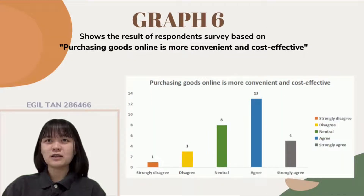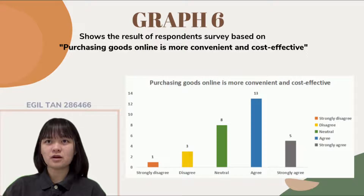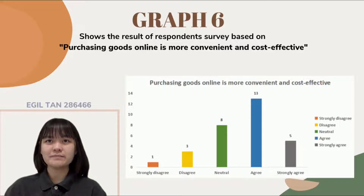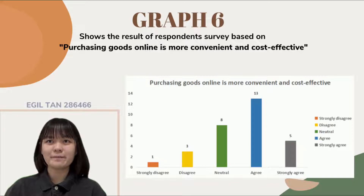In graph 6, the question is about whether purchasing goods online is more convenient and cost-effective. The majority — 13 out of 30 respondents — agree with this. Most respondents agree that purchasing goods online saves time and effort when ordering, purchasing, and having products delivered to their door. They can shop at home, especially on hot days, and rapid delivery is more convenient. Shopping at a physical store is considered extremely exhausting compared to purchasing goods online.